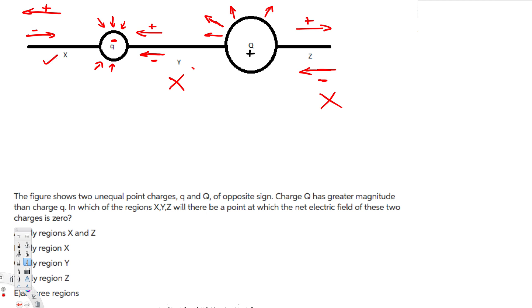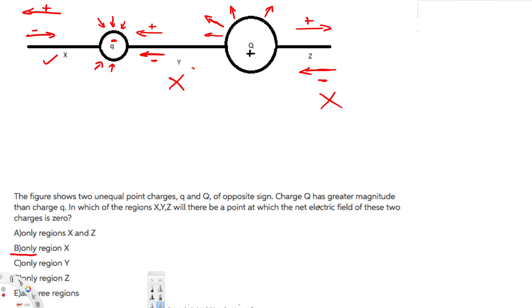Therefore, the only possible location is region X. Only in region X can the net electric field be equal to zero. That's how we do this kind of problem — hope you guys liked this video, see you next time.